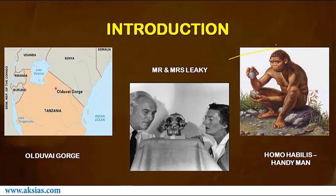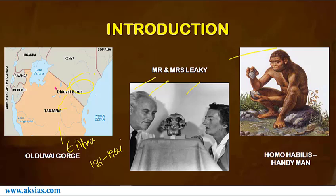Now let us understand about Homo habilis. The first fossil of Homo habilis was discovered at Olduvai Gorge by the Leakey couple — that is Louis Leakey and Mary Leakey — in Tanzania, which is in East Africa. They discovered this between 1961 to 1964. In 1961 Leakey discovered the fossils of Homo habilis, and finally in 1964 they named it as Homo habilis.